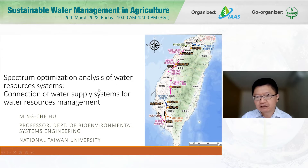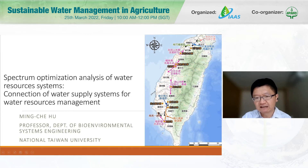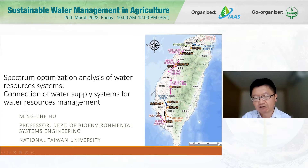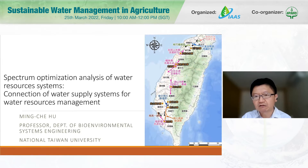Why do we need to propose this new methodology? On the right-hand side you can see a map of Taiwan. In the middle area, the green parts are the mountain area. In Taiwan we have many rivers to supply water resources and we also have storage reservoir systems, so in each area we have a small local regional water resource system.